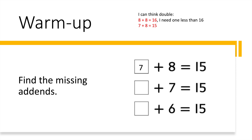We could continue thinking about doubles, or we could look at eight, seven, and six. Do you notice anything about these numbers? The sum is 15 for all of them. Did you notice anything about these numbers? It's one less — eight, seven, six.